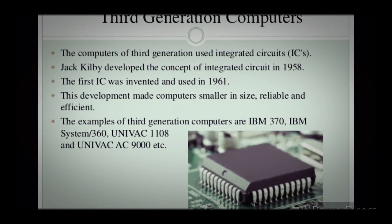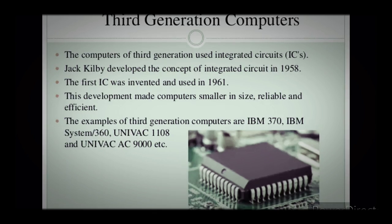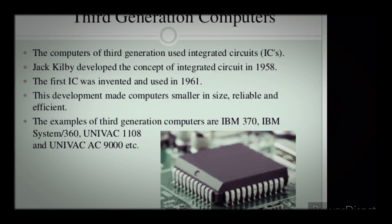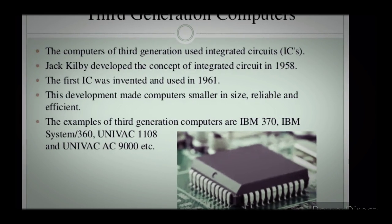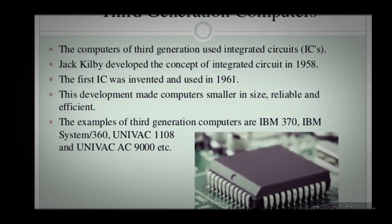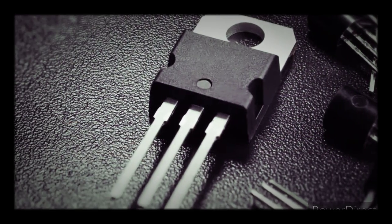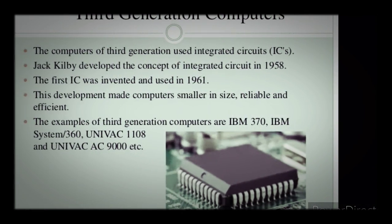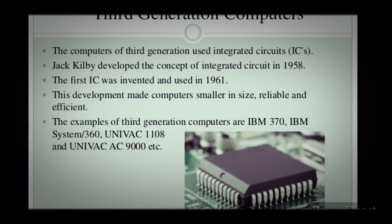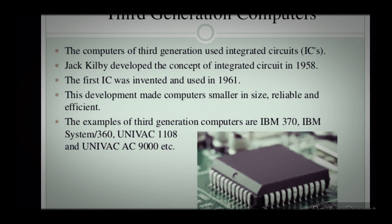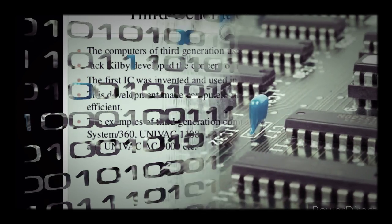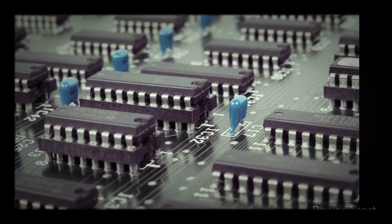The third generation introduced the use of integrated circuits, spanning the years 1964 to 1970. Here, one chip contains multiple transistors. Transistors are explained well in my previous video about the second generation. The first to develop the idea of the integrated circuit was Noyce of Fairchild Semiconductor and Jack Kilby, an American electrical engineer of Texas Instruments, in 1959.